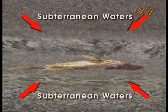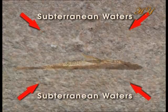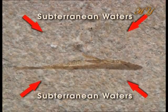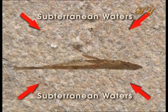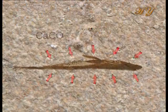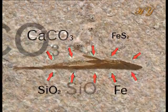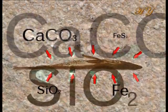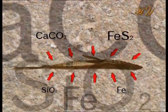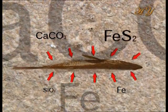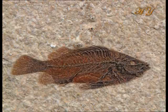Subterranean waters begin seeping into the decaying tissues, and the minerals contained in these waters gradually replace the chemicals in the tissues. These materials that replace the chemicals in the tissues are the building blocks of rocks such as dioxide, pyrite, silica and iron, and are far more resistant to wear and erosion. Thus, over the course of millions of years, these minerals produce an exact stone copy of the original structure by replacing the tissues within it.